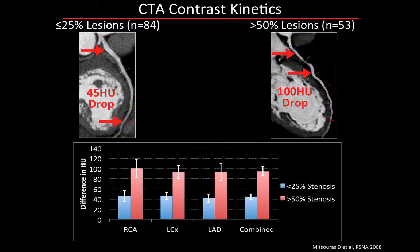When we looked at coronary arteries with significant stenosis—greater than 75% lesions—that drop-off was much larger. So that gave us the impression that there might be something in the contrast enhancement along a vessel at isotemporal 320-detector CT that might convey something about the flow.